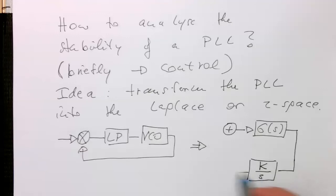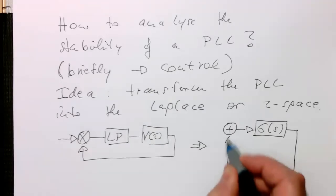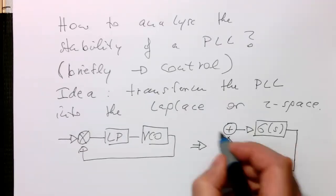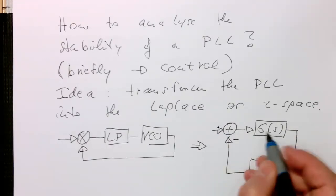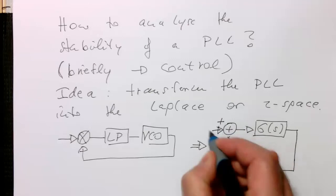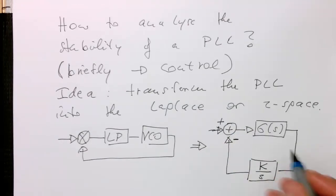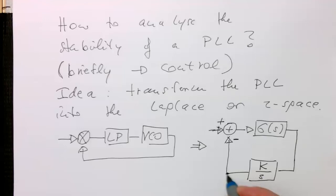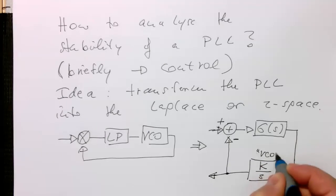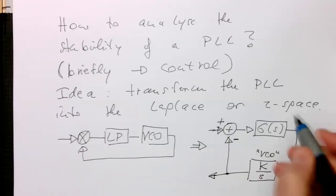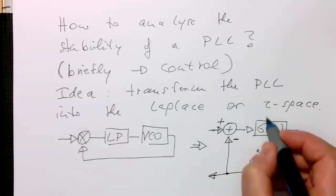And then the integrator feeds back into the system here. So that's our input that's negative, that's positive here. And then this would be our output here. So that's our VCO, and this is our low-pass.